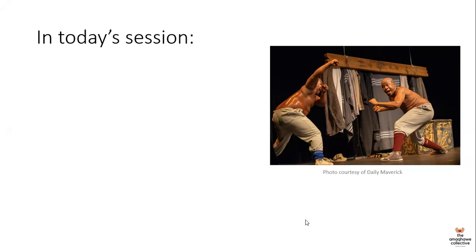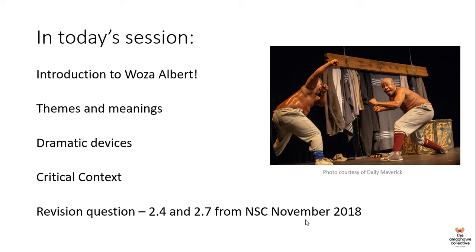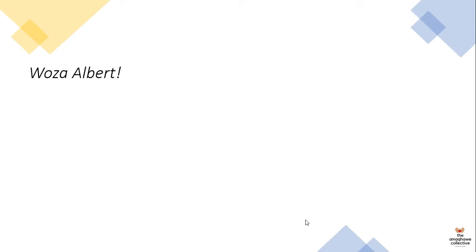In today's session we are going to look at an introduction to Woza Albert, just briefly to remind you what the play is about. Then we'll look at the themes and possible meanings derived from those themes. Thereafter we look at the dramatic devices used in the staging of the piece, then the critical context — what this play meant for South Africans — and lastly we look at revision questions 2.4 and 2.7 from the November 2018 National Senior Certificate paper for Dramatic Arts.